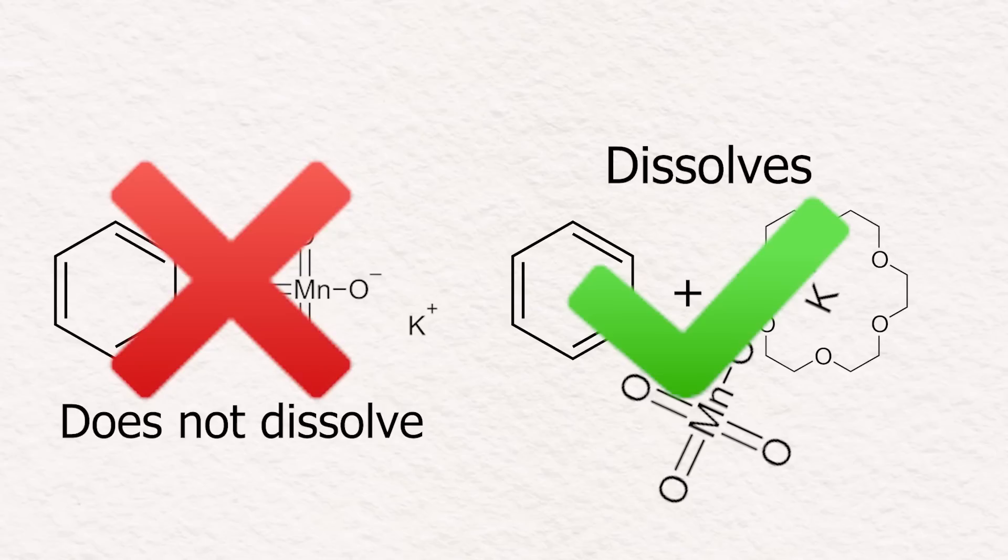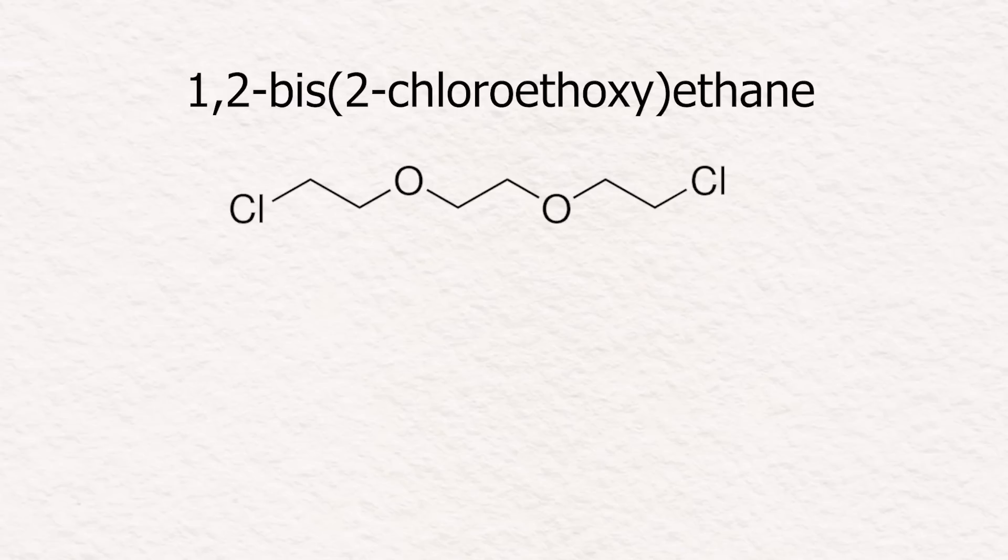So using 18-crown-6 will allow you to use potassium permanganate as an oxidizer in organic solvents. So in this video, I will be making 1,2-bis-2-chloroethoxyethane, which I will then use for the synthesis of 18-crown-6. And afterward, I will dissolve some 18-crown-6 in benzene and add some potassium permanganate to get some purple benzene.